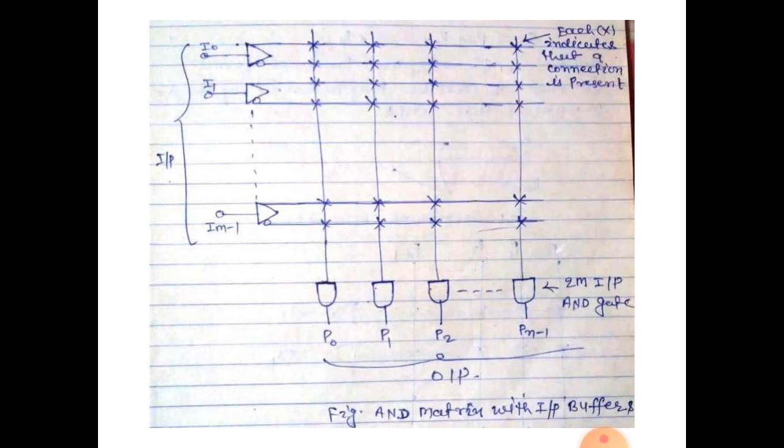This diagram is explained by AND gate. This I0, I1, I2, Im minus 1 as an input. This invert to convert input buffer to I0, I0 complement, I1, I1 complement, Im minus 1 and Im minus 1 complement. This output is also as an input of AND gates. This AND gates provide the product term P0, P1, P2, Pn minus 1. This is the complete AND gate.